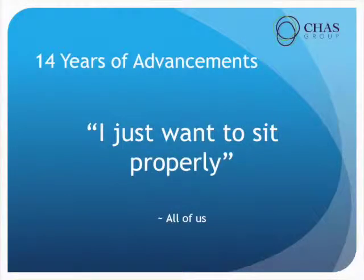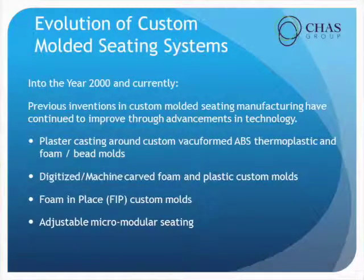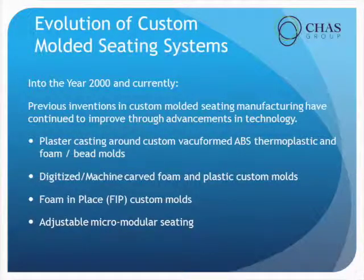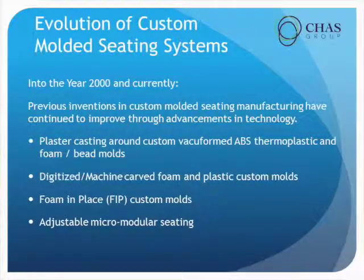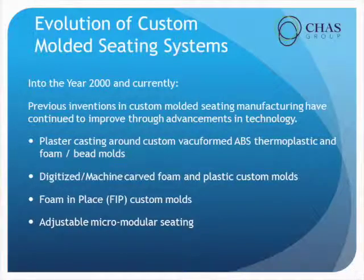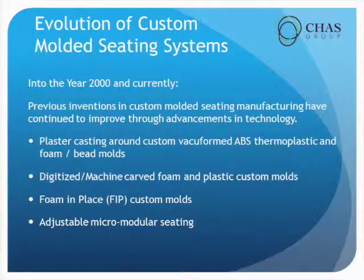So, 14 years of advancements — I just want to sit properly. Emerging into the year 2000 and currently: previous interventions continue to improve with improvements in technology. We still use plaster casting, vacuum form ABS thermoplastics, and foam and bead molds. Digitized and machine-carved foams and plastics are still being used today. Foam in place — we're still using those especially now with limited funding.